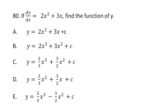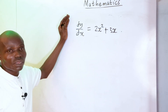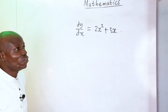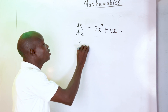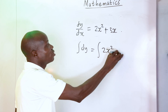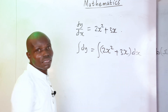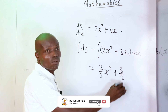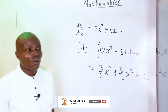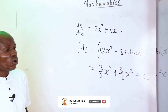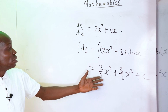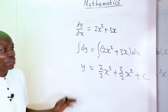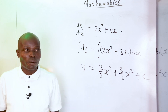Number 80: given dy/dx equals 2x squared plus 3x, find y. Integrating both sides: y equals the integral of (2x squared plus 3x) dx, giving 2/3 x cubed plus 3/2 x squared plus C. That is option C.